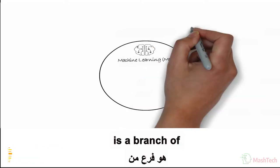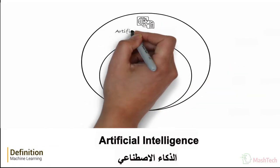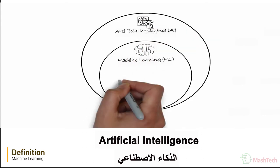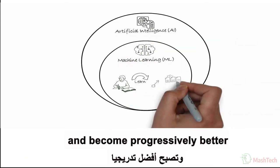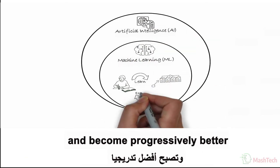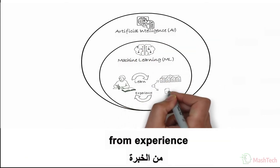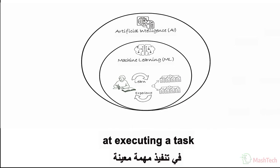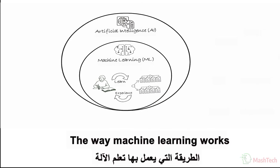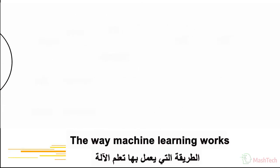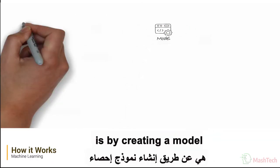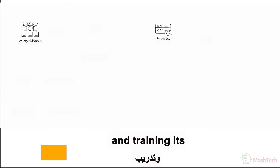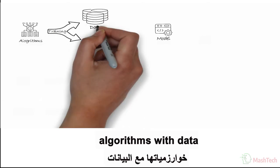Machine learning is a branch of artificial intelligence that can learn on its own and become progressively better from experience at executing a task. The way machine learning works is by creating a model and training its algorithms with data.